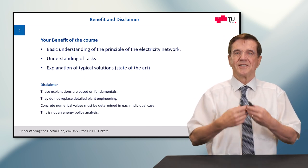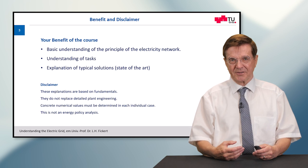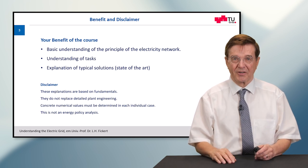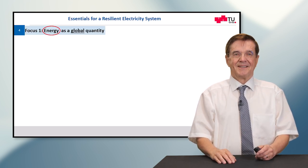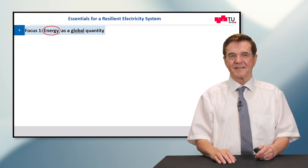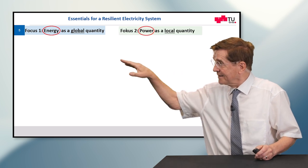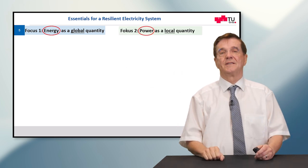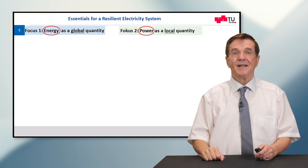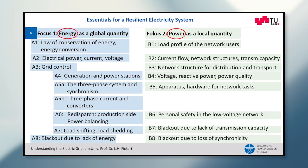So this course is not meant as an engineering course, it's rather focused on fundamentals. The essentials for resilient electricity systems are energy as a global quantity and power as a local quantity. Today we concentrate on the blackout due to loss of synchronicity.